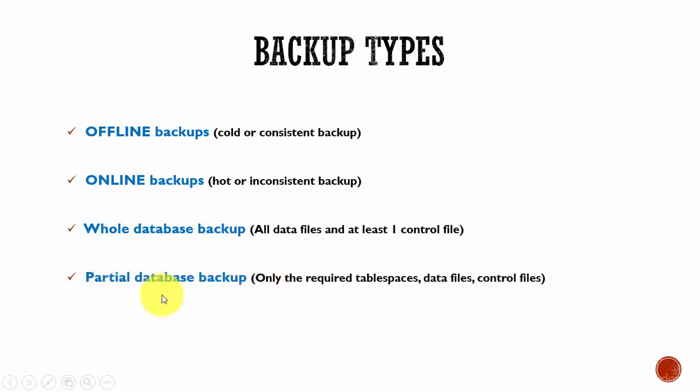Next is partial database backup. This kind of backup is for when you have a specific need — like if you want to back up only a specific tablespace, a specific data file, or a control file. Then you can use this kind of partial database backup.